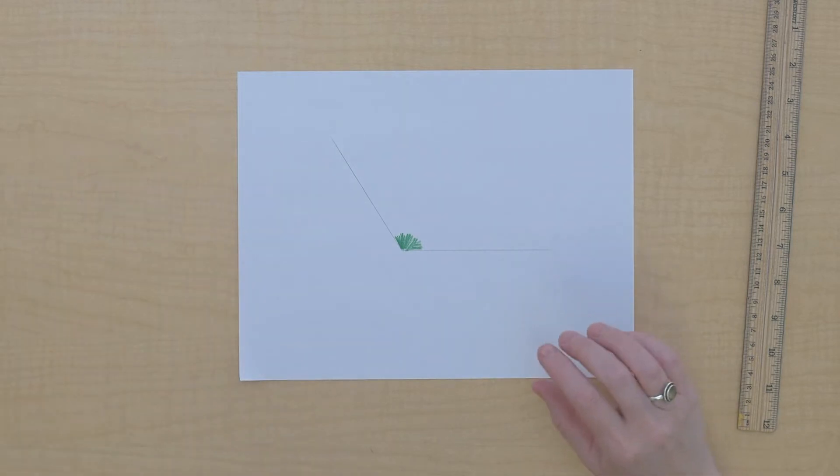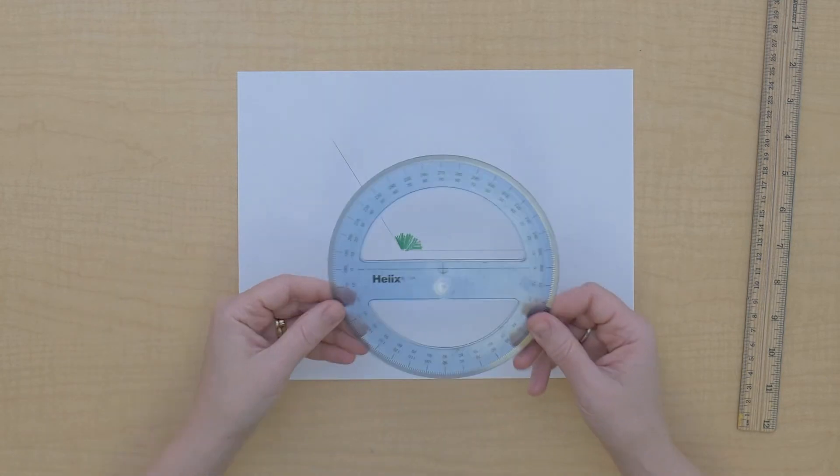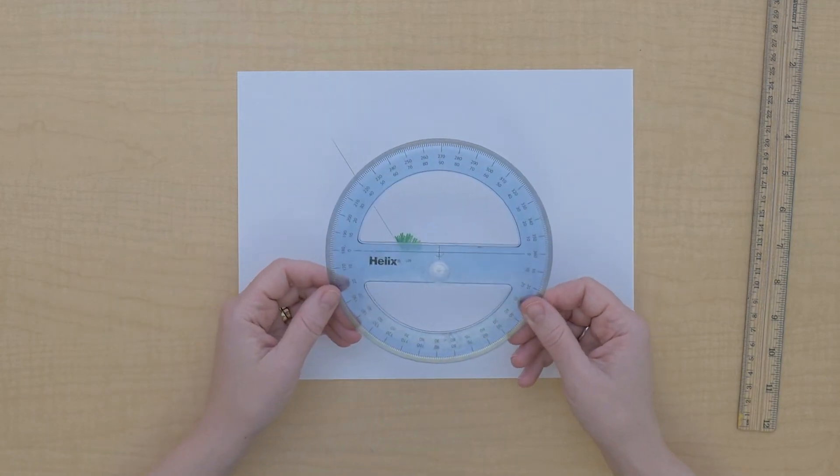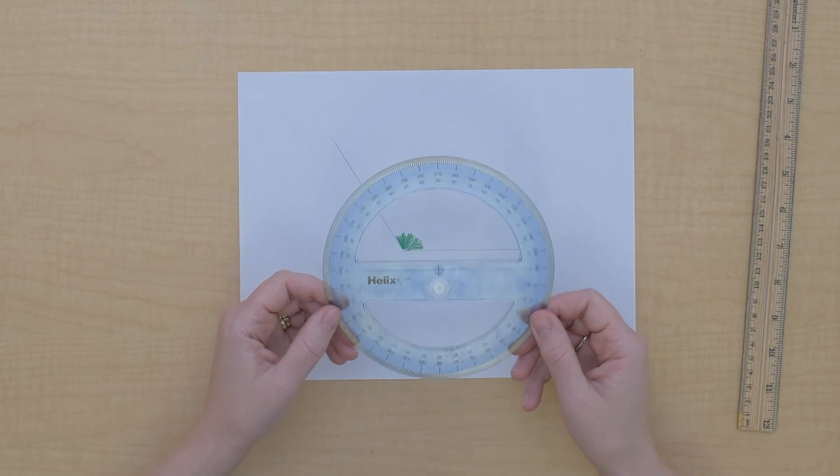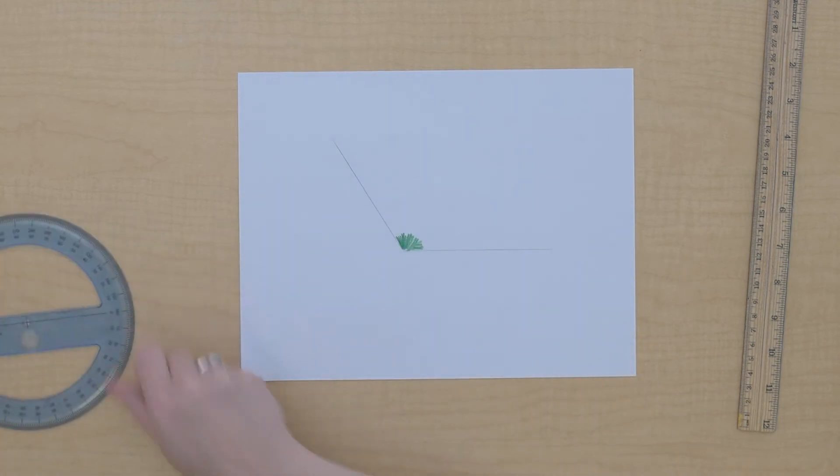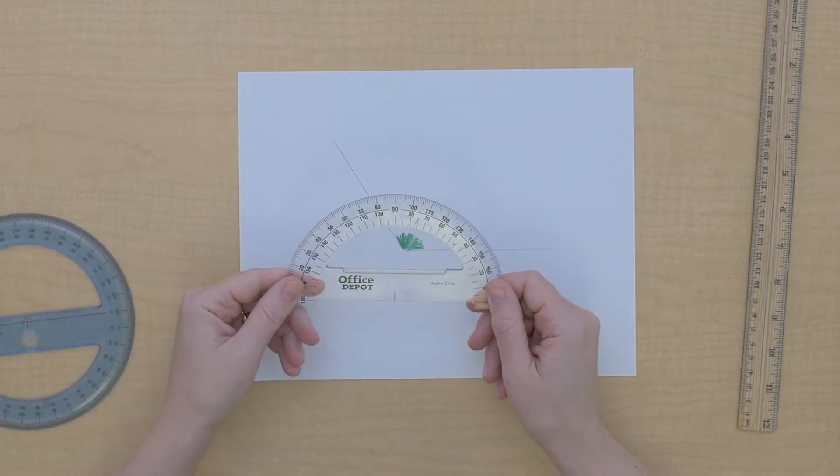So there's a couple of kinds of protractors that we can use. There's some protractors like this that are shaped in a circle, similar to our Montessori protractor. And then there are some that are half circles.